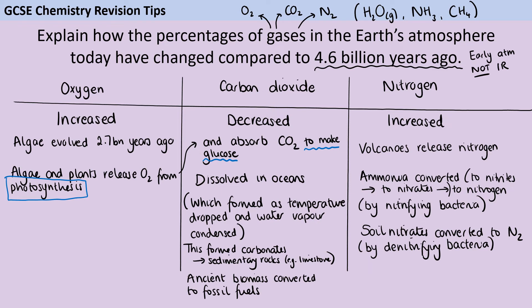As is often the case with these 6-mark extended response questions, particularly if they're common between foundation and higher tier, you don't need to have said everything on this slide to get 6 marks. You probably don't need to put a timestamp on when algae evolved, even though that is in the specification, because the question doesn't ask about when within those 4.6 billion years changes happened. You also probably don't need to explicitly say that CO₂ could only dissolve after the oceans formed, and all the extra nitrogen cycle detail about nitrifying and denitrifying bacteria — true and interesting as it is — you don't need to have included it.